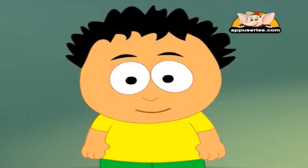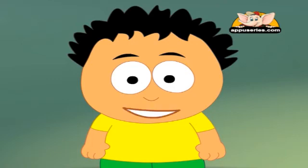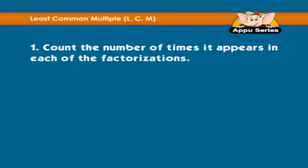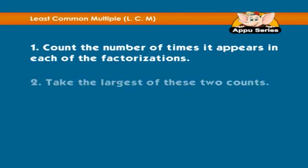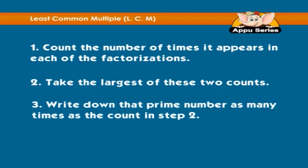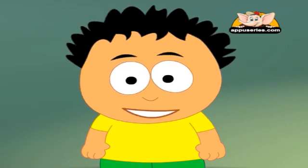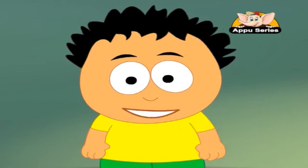Method 2: factor each of the numbers into primes. For each different prime number in either of the factorizations, follow these steps: 1) count the number of times it appears in each of the factorizations; 2) take the largest of these two counts; 3) write down the prime number as many times as the count in step 2. To find the least common multiple, take the product of all the prime numbers written down in steps 1, 2, and 3.